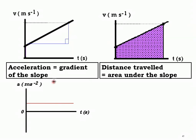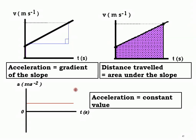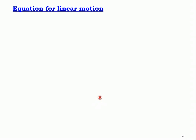The acceleration versus time graph would be a straight horizontal line — a constant value. Now, let's look at the equation for linear motion and how it comes about.